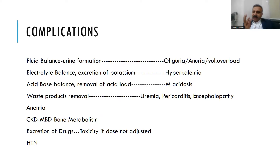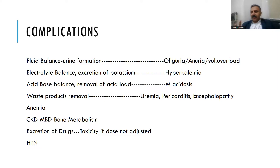What are the complications of AKI if left untreated or if very severe? The kidney maintains fluid balance and makes urine — when injured, less urine forms, leading to oliguria and fluid overload, CHF, and shortness of breath. There is less excretion of potassium, causing hyperkalemia. The kidneys cannot excrete excess acid, leading to metabolic acidosis. Waste products like urea and creatinine accumulate, causing uremic syndrome, uremic pericarditis, and uremic encephalopathy. Erythropoietin deficiency causes anemia. You can also develop hypocalcemia, hyperphosphatemia, and hyperparathyroidism.